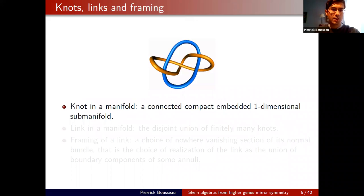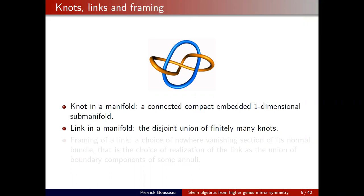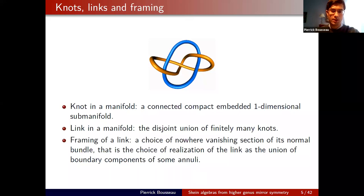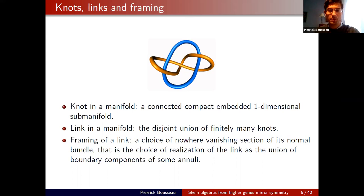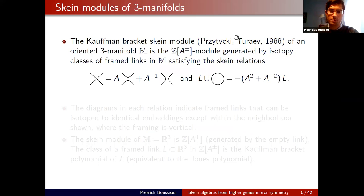We discuss knots and links. A knot in a manifold is a connected compact embedded one-dimensional submanifold; a link is a disjoint union of finitely many knots. A framing of a link is a choice of nowhere-vanishing section of the normal bundle, equivalently a choice of framing of each component as a boundary component of an annulus. The Kauffman-Bracket Skein module, introduced by Przytycki and Turaev at the end of the 1980s, is one algebraic construction arising from knots and links.